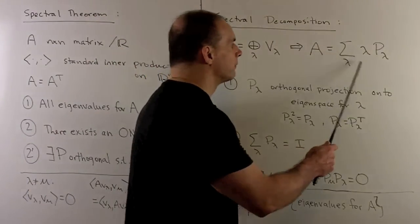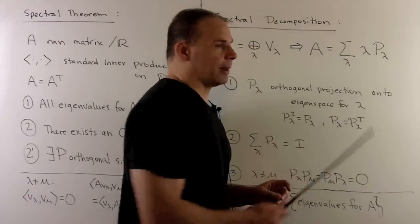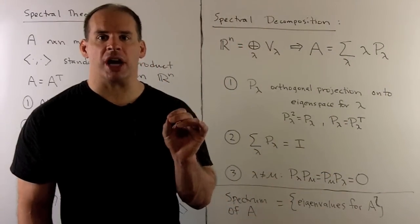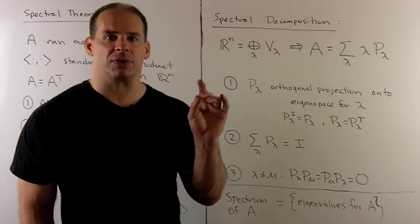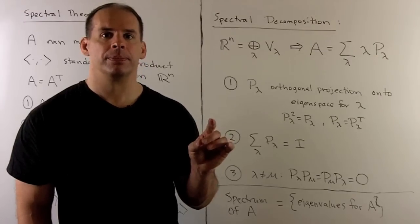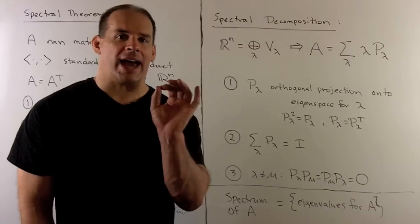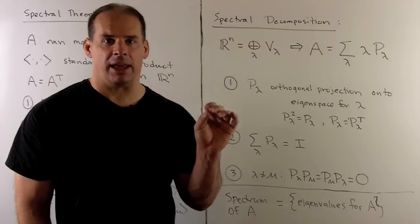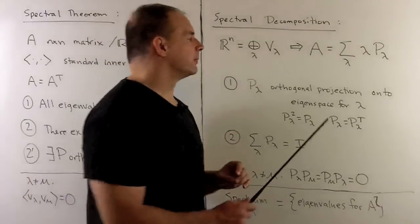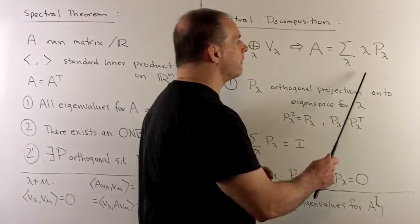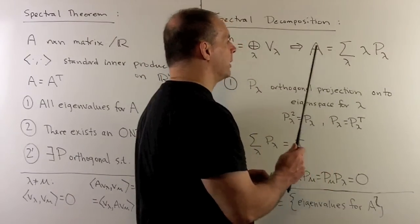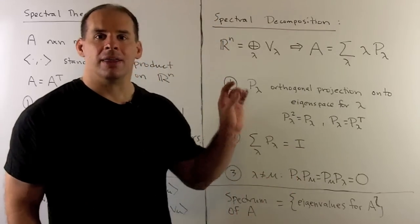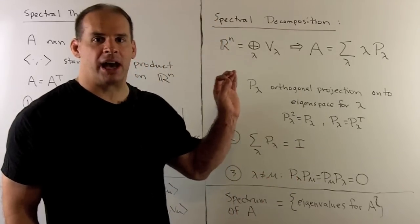For each term in the sum, P sub lambda is going to be the orthogonal projection onto the eigenspace for lambda. On that eigenspace, A acts by multiplication by lambda. If we take the sum of all these, we're going to get back A. So that's our spectral decomposition.